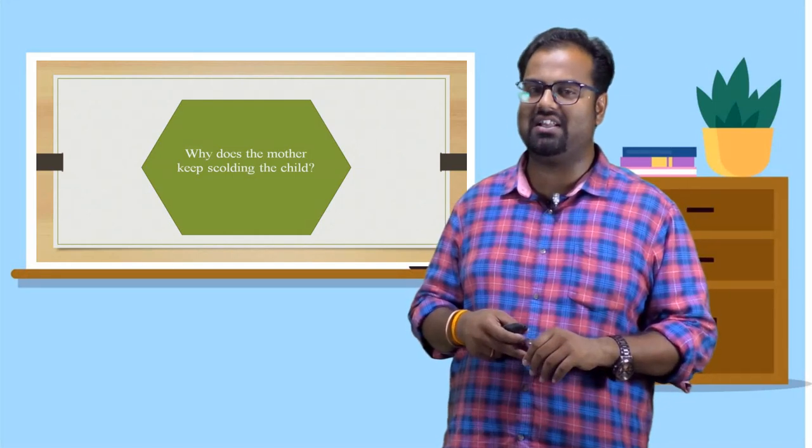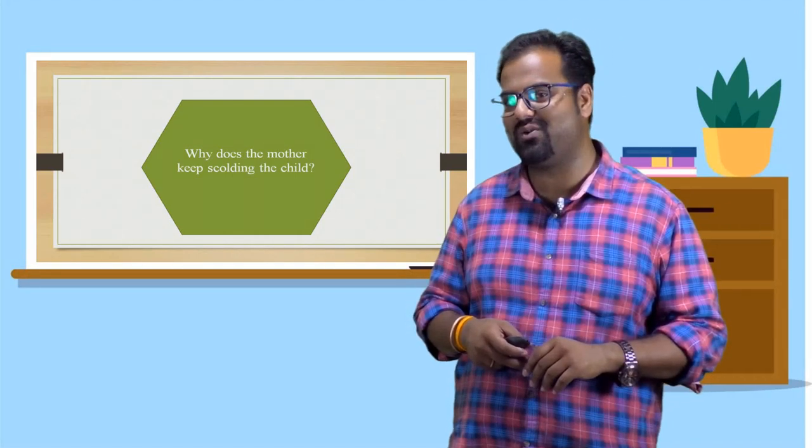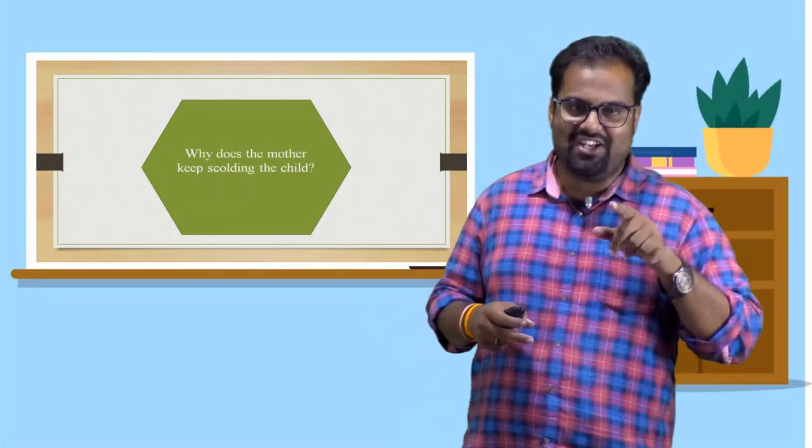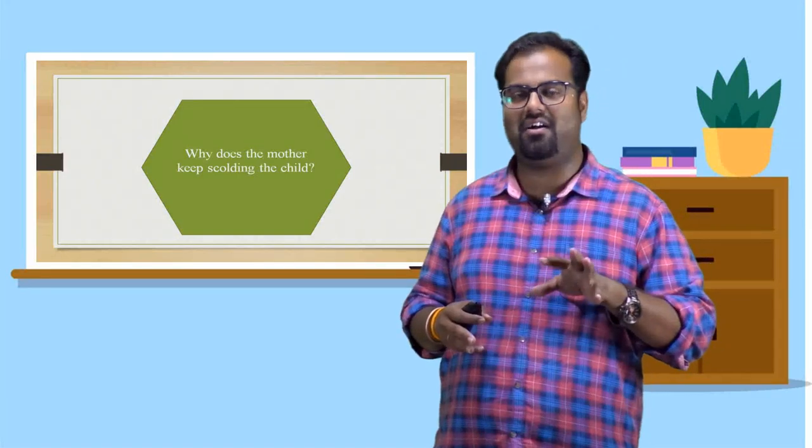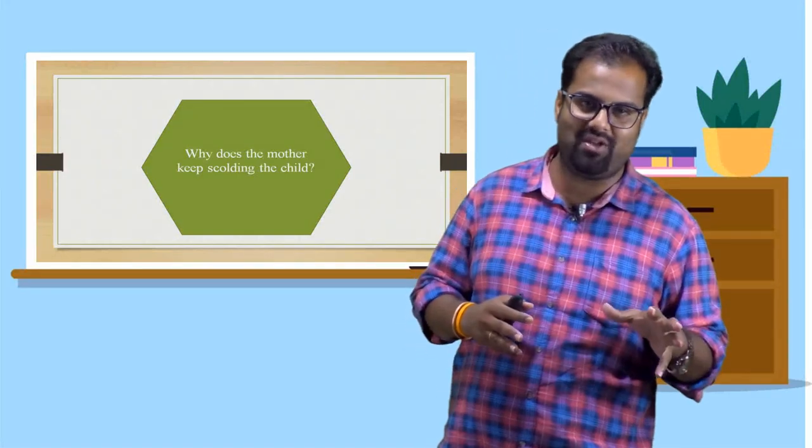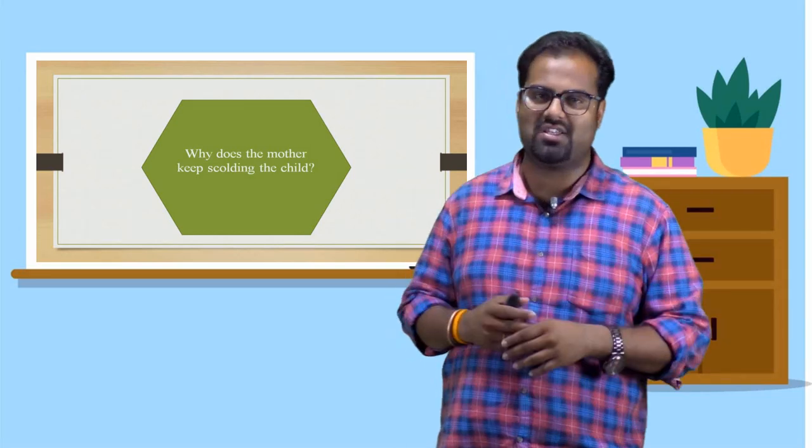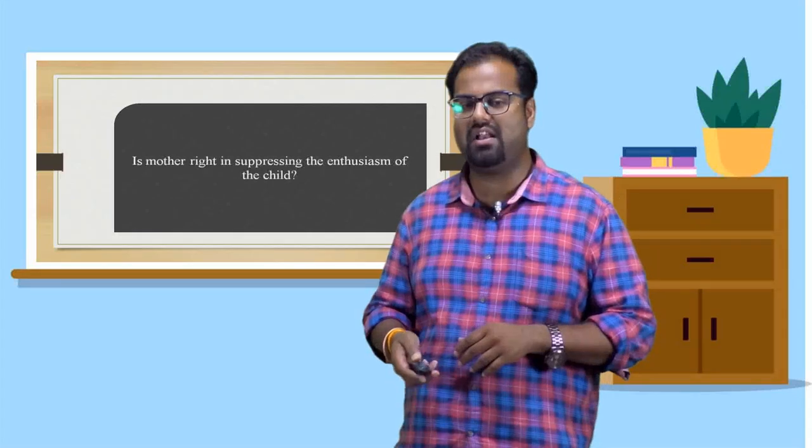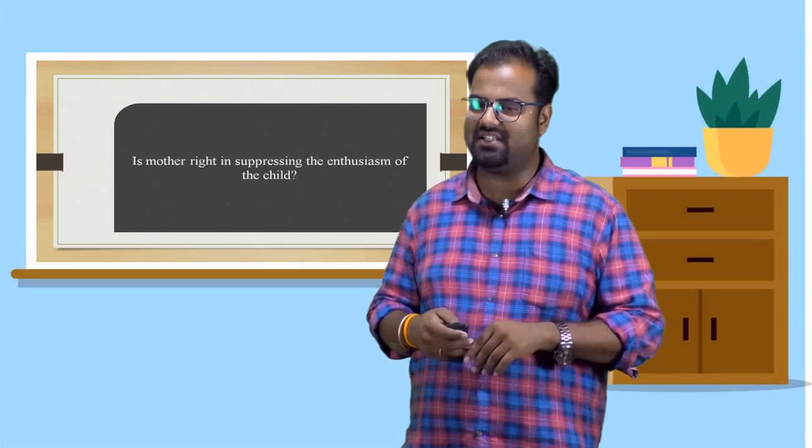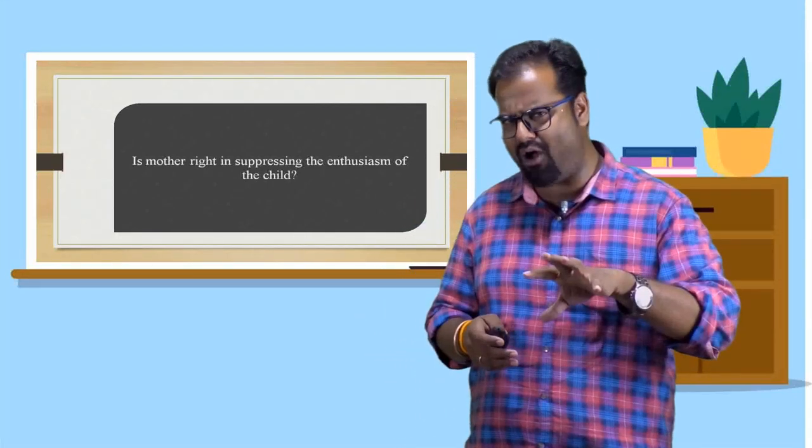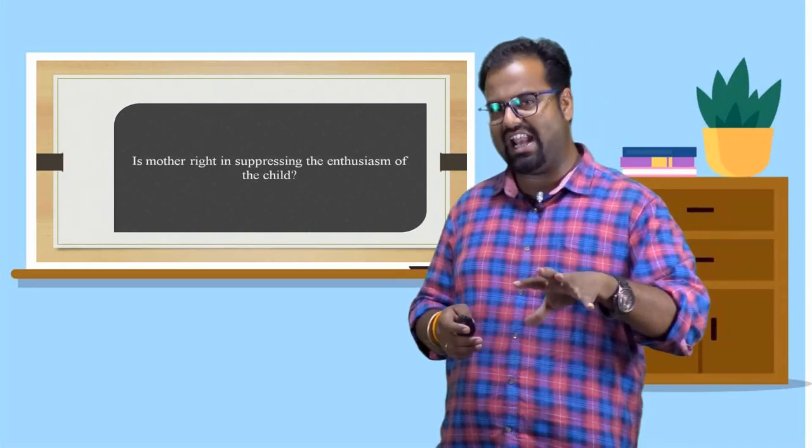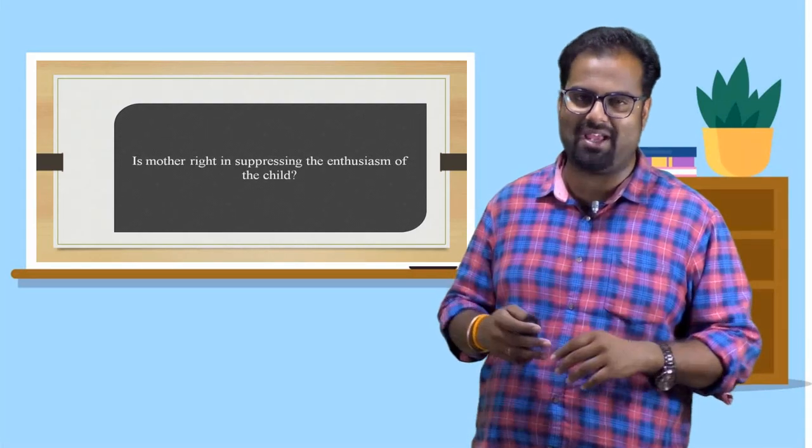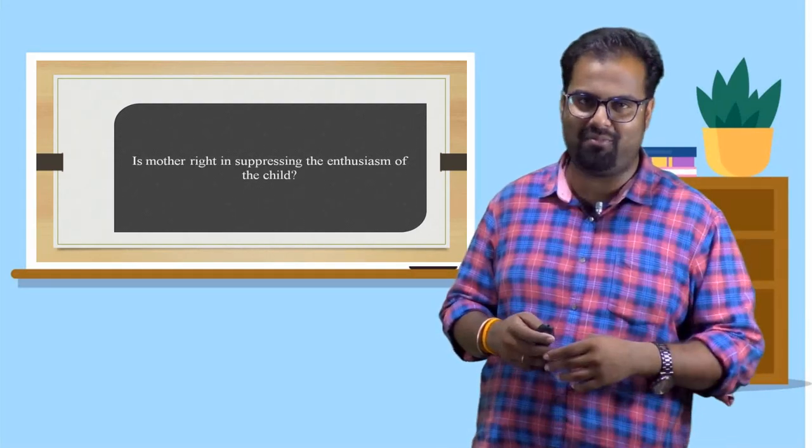Why does the mother keep scolding the child? Why does mother keep scolding the child? Because the child in the poem keeps disturbing father's work. He goes into the room. He is making some noise. That is spoiling the father's work. That is why mama is very upset. Next one. Is mother right in suppressing the enthusiasm of the child? Do you think mom in this poem is very appropriate? Is she correct that she shuts the mouth of the child every time he makes some noise or he is doing some activity? Do you think mom in the poem is very appropriate?